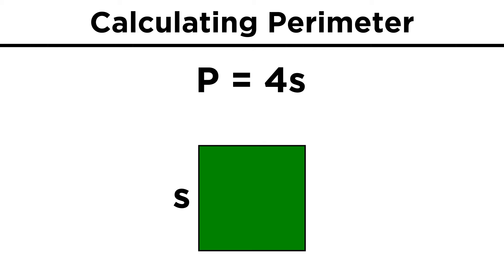For squares, it's even simpler. It's just the side length times four, since all the sides are the same.